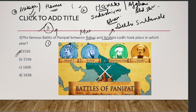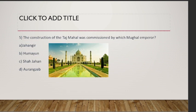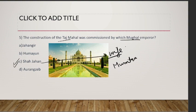Who was the mother of Emperor Akbar? The answer is Hamida Banu Begam. The construction of the Taj Mahal was commissioned by which Mughal emperor? We have known since childhood from history books — the answer is Shah Jahan. He built it in memory of his wife, whose name was Mumtaz Mahal.